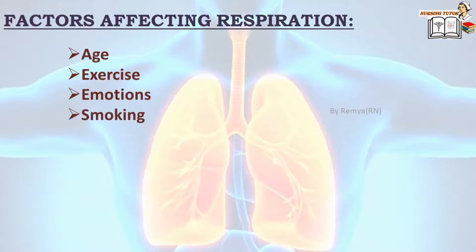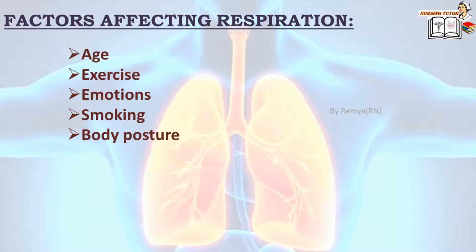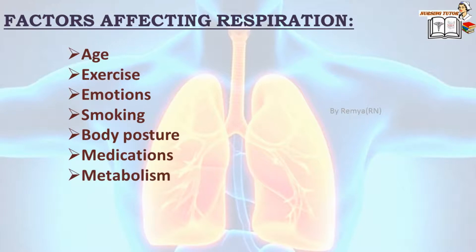Next, smoking — chronic smoking brings changes in the respiratory tract and alters the normal respiration rate of the client. Body posture — a straight posture enhances chest expansion, whereas lying flat prevents it; this is why we provide a Fowler's position to clients experiencing difficulty in breathing. Medications such as opioids, general anesthesia, and sedatives decrease the respiratory rate.